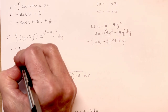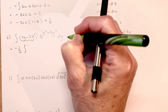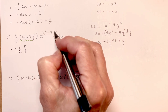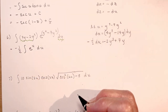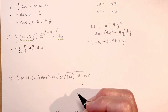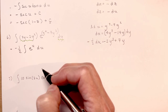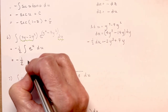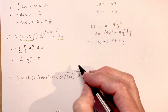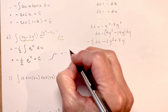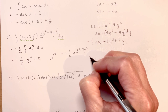So now I'm going to say that's minus 1/2 times the integral of e to the u du — since this part got replaced by du, and e to the u stays. The integral of e to the u is just e to the u, so I get minus 1/2 e to the u plus c. Plugging back in: minus 1/2 e to the quantity y to the fourth minus 7y squared, plus c.